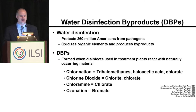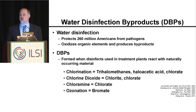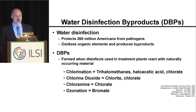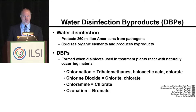If you take a look, these are called DBPs — disinfection byproducts. If you use chlorination, which is really good at killing these bugs, you get trihalomethanes, haloacetic acid, and other things.